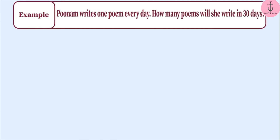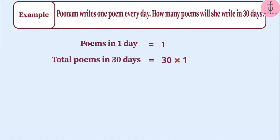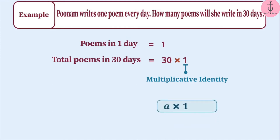Poonam writes one poem every day. How many poems will she write in 30 days? Since she writes one poem every day, in 30 days she will write 30 times one poem. 1 is the multiplicative identity, because if any number is multiplied by 1, the result will be the same number. Therefore, 30 times 1 is 30, which means Poonam can write 30 poems in 30 days.